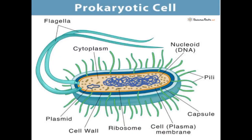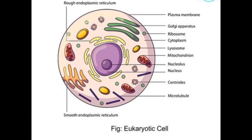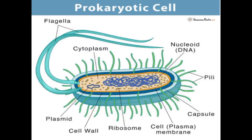There are two types of cells: prokaryotic cells and eukaryotic cells. Prokaryotic cells are single-cell microorganisms. They are less organized and less dynamic than eukaryotic cells. Prokaryotic cells do not have cell organelles that are present in eukaryotic cells.